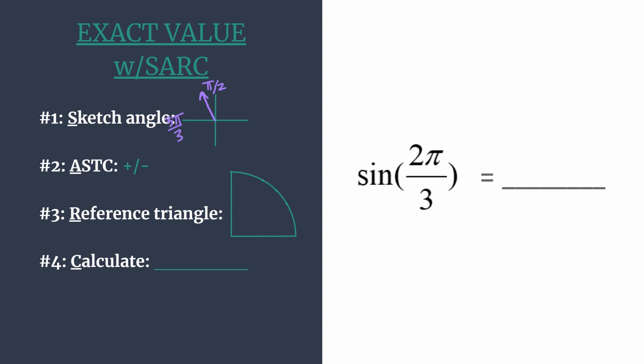Moving on to step two, we think ASTC to see if our answer should be positive or negative. And that's so that we know which trig functions are positive or negative in each quadrant. So all in the first, sine and cosecant in the second, tangent and cotangent in the third, and cosine and secant in the fourth.